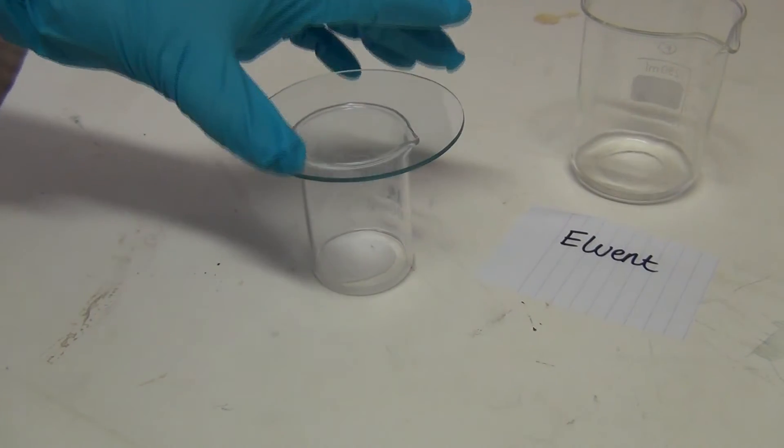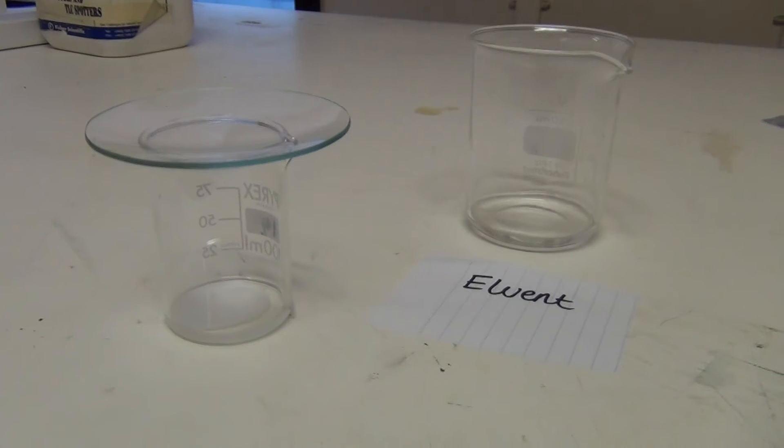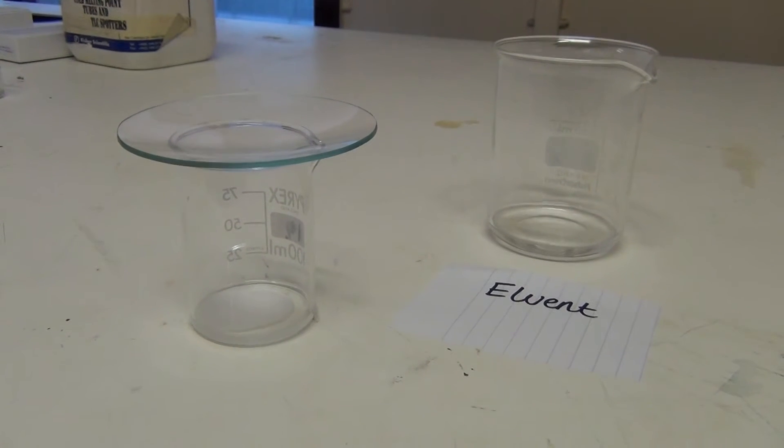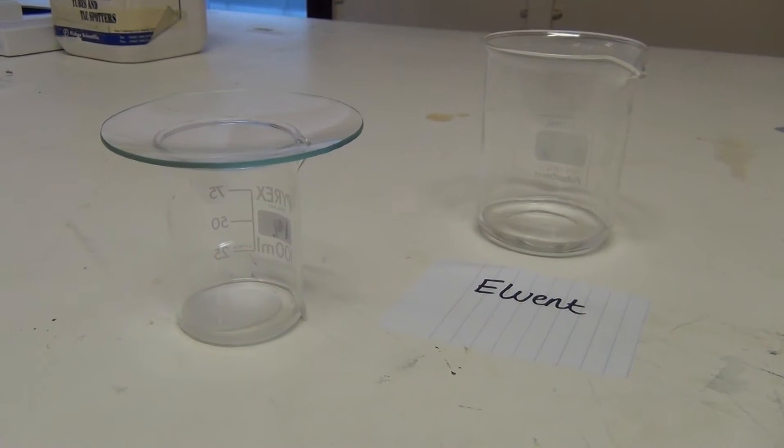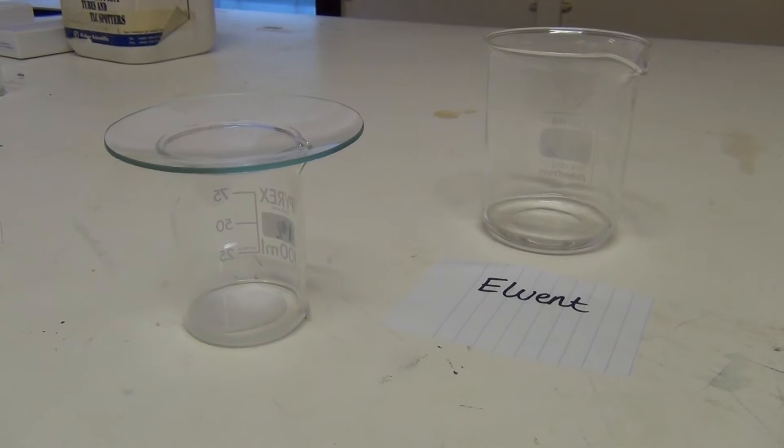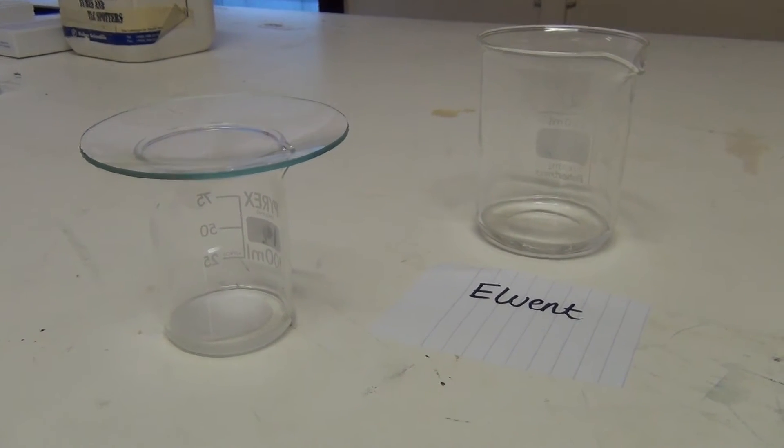This solvent is known as the eluent and is the mobile phase in TLC. Then place the lid onto the top of the chamber and leave for a few minutes as this prevents the solvent from evaporating, and ensures that the tank becomes saturated with eluent vapour.